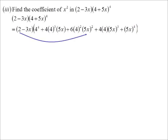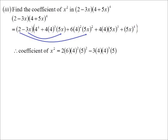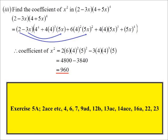And I know in order to get x squared, 2 would have to be multiplied by the term with x squared, and the 3x would have to be multiplied by the term with the x. I'm really only concerned with those two terms. I can work out 2 times 6 times 4 squared times 5 squared minus 3 times 4 times 4 cubed times 5, which you probably beat me to it already. 960.